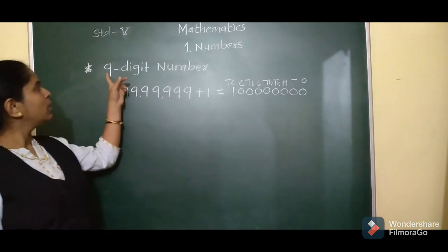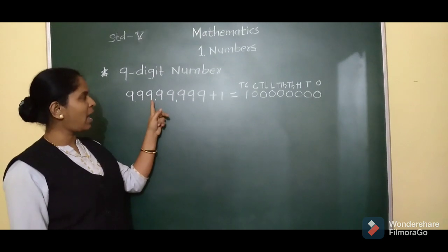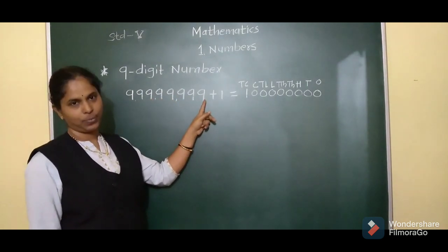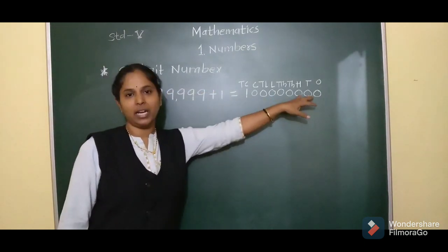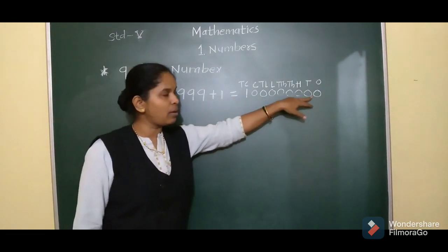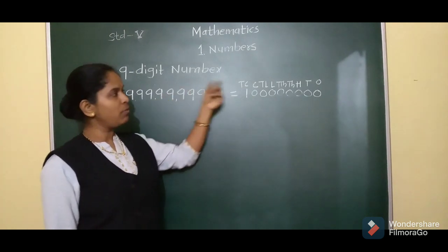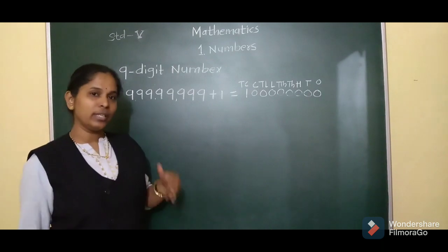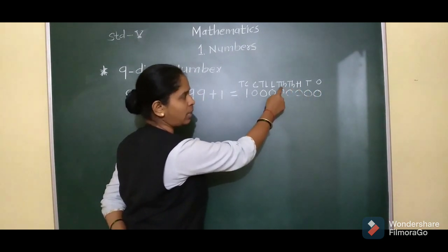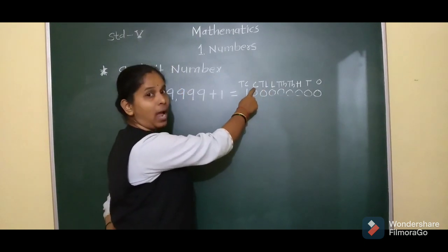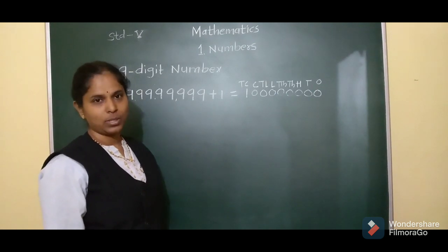Now we will learn about 9-digit numbers. The greatest 8-digit number is 9 crores, 99,99,999. When we add 1 to this greatest 8-digit number, the answer we get will be the smallest 9-digit number. Looking at the places: 1's, 10, 100, 1000, 10,000, lakhs, 10 lakhs, crore — and the new place we get is 10 crores. So this number is 10 crores.